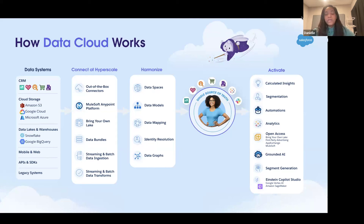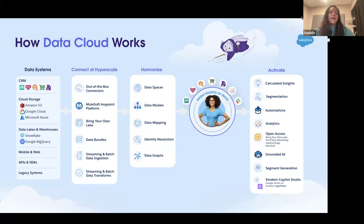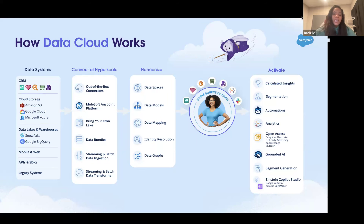As of recently, the product managers have been working on a new way to pull data into Data Cloud called 'Bring Your Own Lake.' Under that umbrella, we're currently working on the ability to pull in data from Google BigQuery — a huge Google data warehouse — and also Snowflake. Right now, you can do a data share from Data Cloud to Snowflake, and they're working on releasing GA the ability to share Snowflake data into Data Cloud.